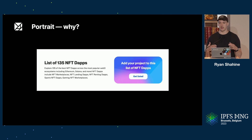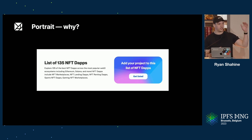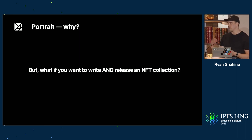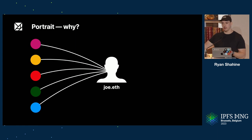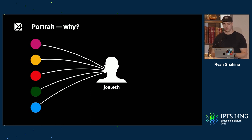And if you'd like to release an NFT collection, there are 135 solutions to actually do that. So for every single use case, there are a lot of solutions out there. But if you'd like to find the conjunction between two things or even more things, that's where things really start to get more complicated. Because what if you'd like to write and release an NFT, or you publish videos and you'd like to blog about something? So let's say Joe, who owns Joe.eth, would like to express himself in various different ways — he uses an array of different dApps to actually do that.